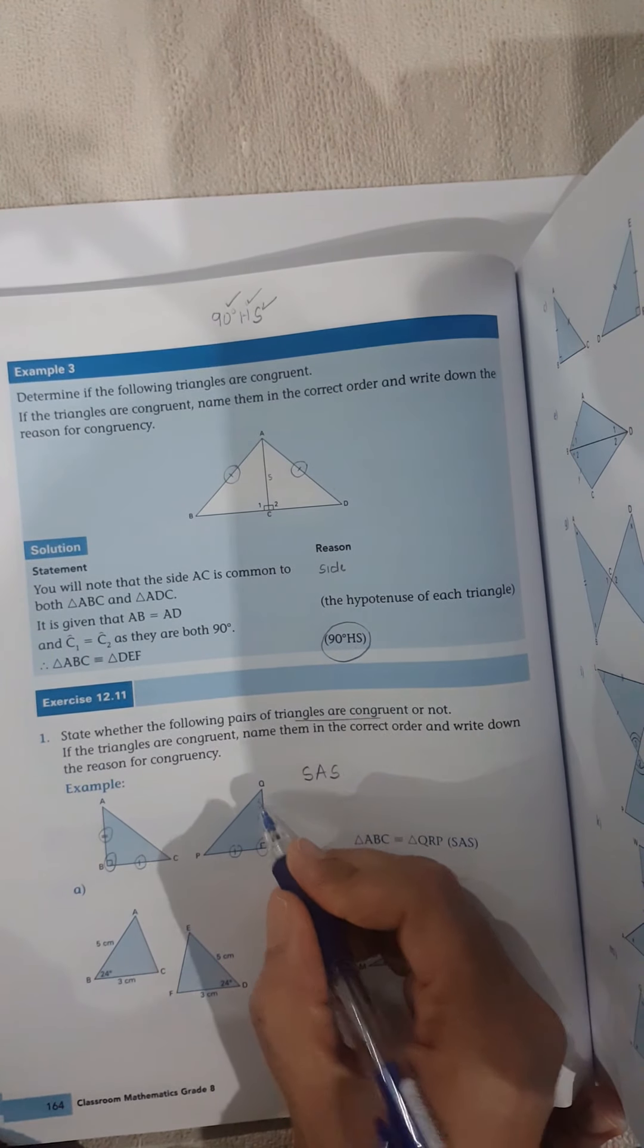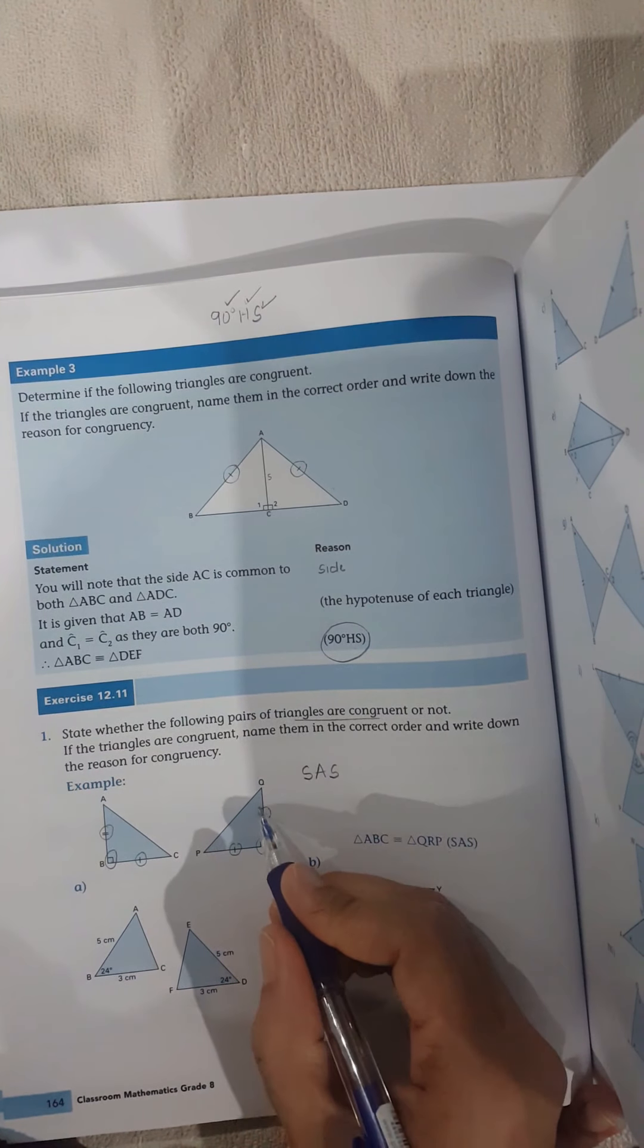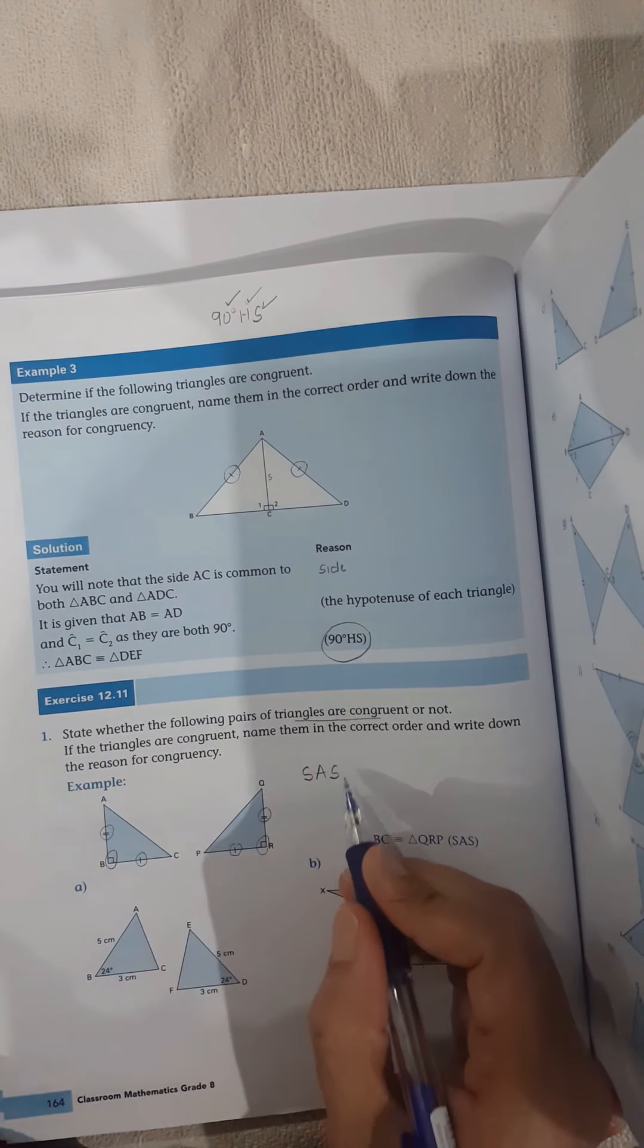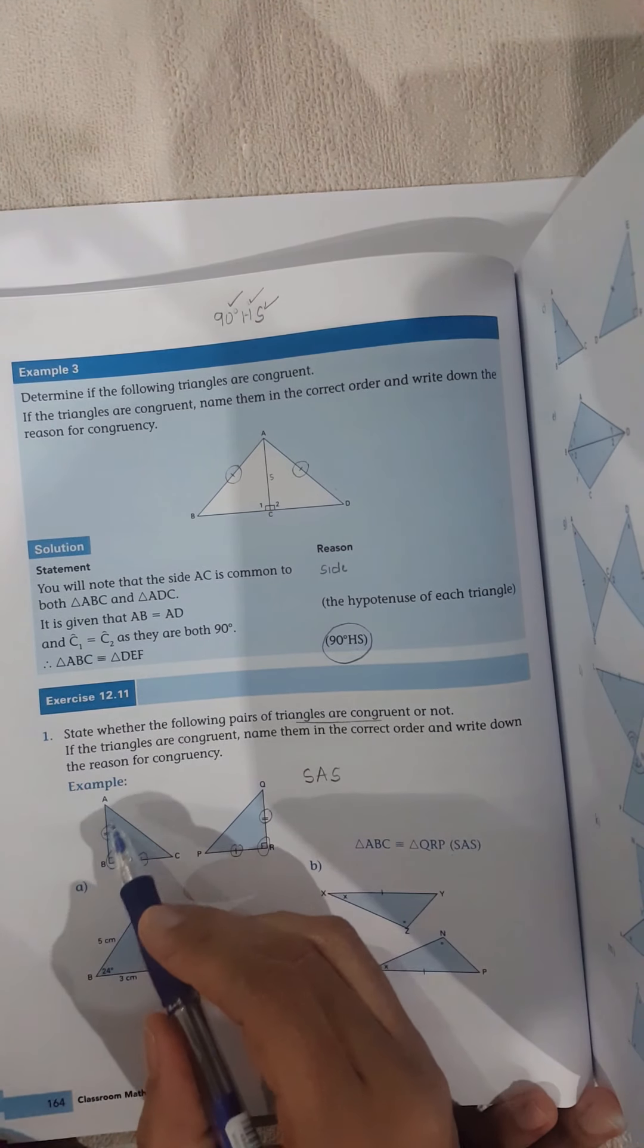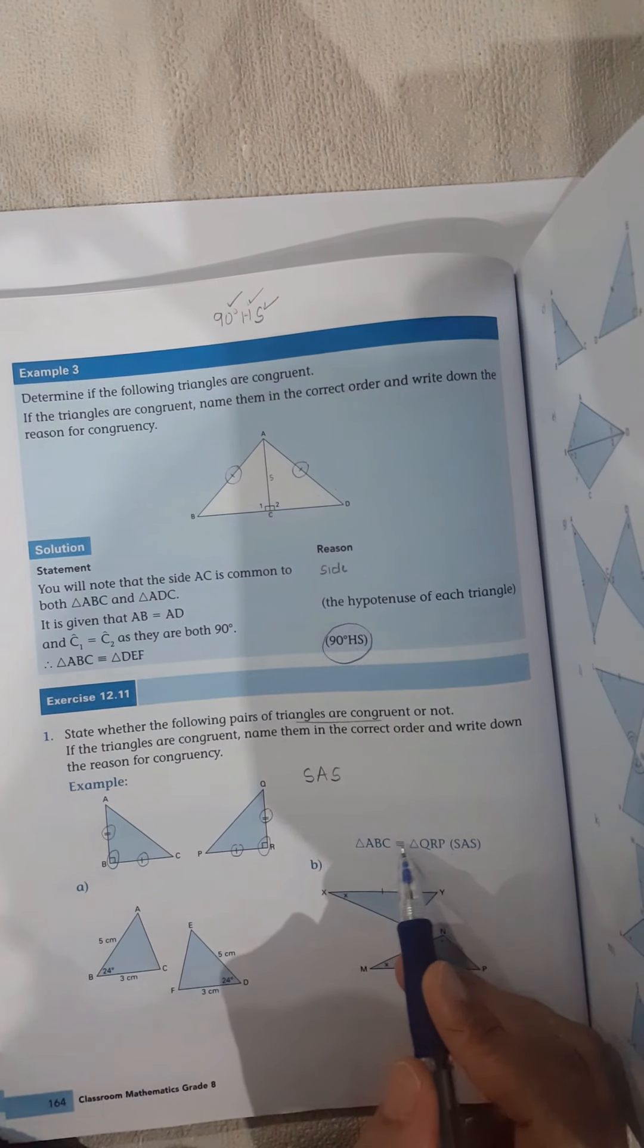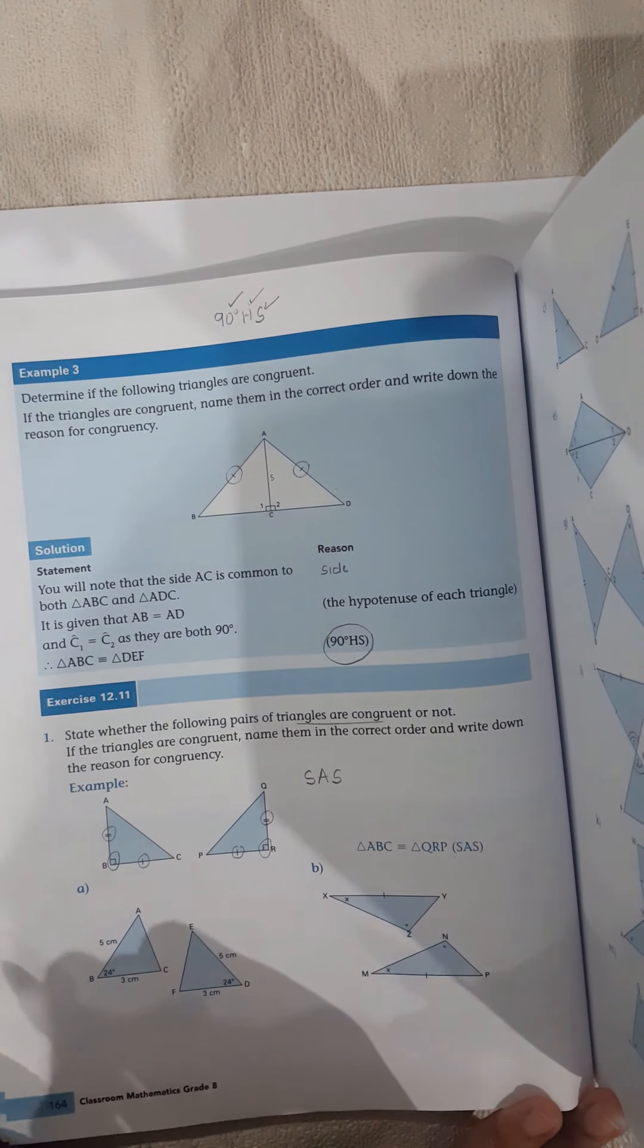Remember, with side, angle, side, the angle must be in the middle of the two angles. So I've got side, angle, side. Therefore, triangle ABC is congruent to triangle QRP.